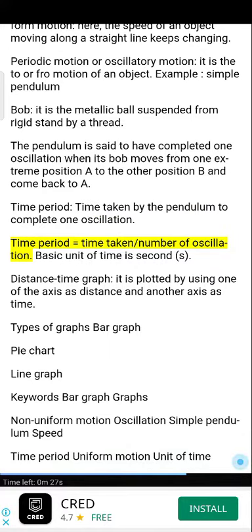Time period equals time taken divided by number of oscillations. Basic unit of time is second. Distance-time graph, it is plotted by using one of the axis as distance and another axis as time.